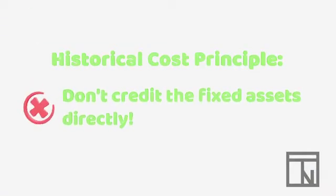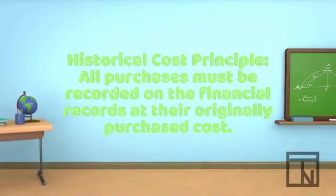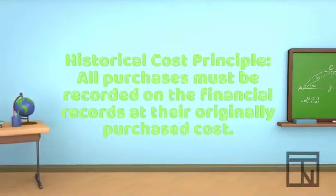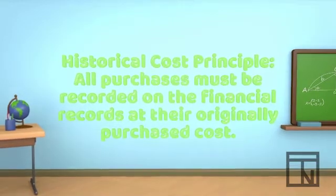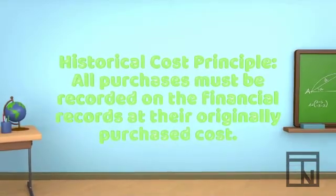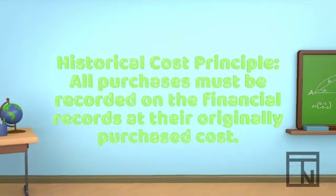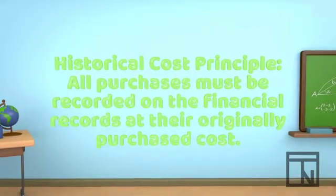While depreciation might reduce the asset in theory, GAAP rules don't allow us to credit the asset directly. One of the generally accepted accounting principles, known as the historical cost principle, prevents it. The historical cost principle states that all purchases must be recorded on the financial records at their originally purchased cost. So, Bob can't change the equipment cost with his depreciation.